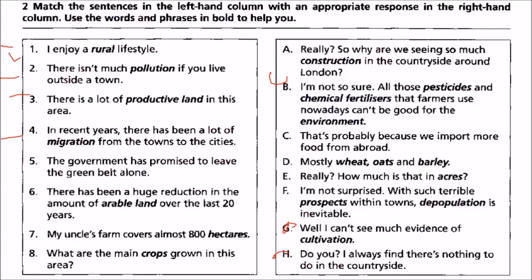Four: in recent years there has been a lot of migration from the towns to the cities. We match it with F — I'm not surprised, with such terrible prospects within towns. Depopulation is inevitable.